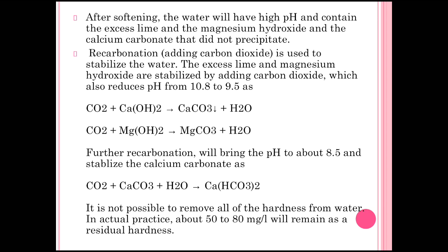When CO₂ reacts with magnesium hydroxide it forms magnesium carbonate, but since magnesium carbonate is easily dissolved in water, more lime is added to remove it. The pH for this reaction is maintained at about 8.5 to stabilize. When CO₂ reacts with calcium carbonate in the presence of water, it gives calcium bicarbonate. It is not possible to remove all the hardness from water, so actually about 50 to 80 mg/L will remain as residual hardness.